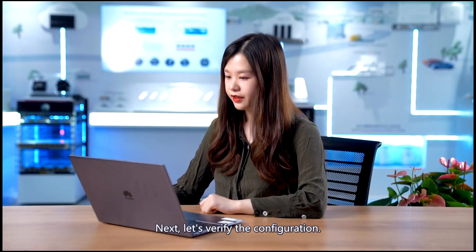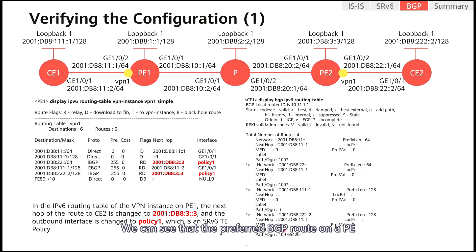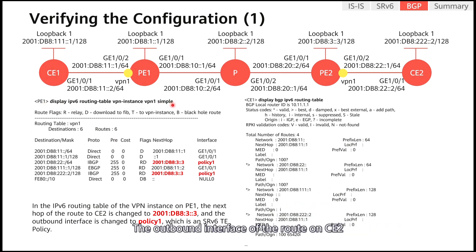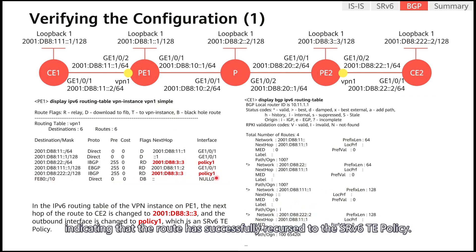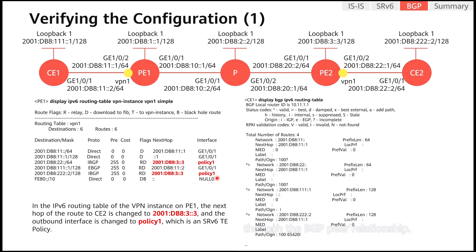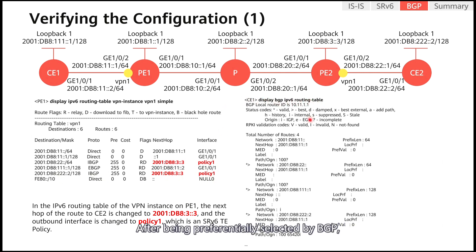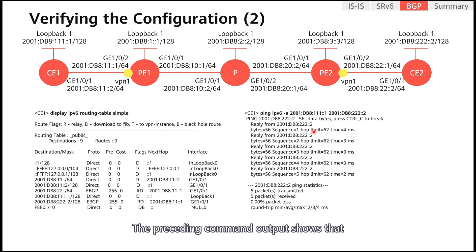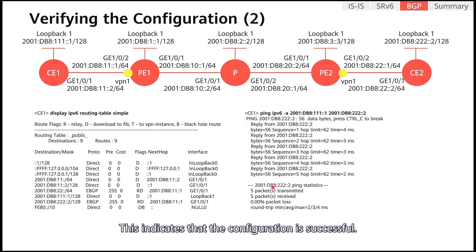Next, let's verify the configuration. We can see that the preferred BGP L3 route on a PE first enters the IPv6 routing table of the corresponding VPN instance. The outbound interface of the route on C2 is displayed as Policy 1, indicating that the route has successfully recursed to the SRv6 TE policy. P1 then advertises the route to C1 through the BGP L3 peer relationship. The route first enters the BGP IPv6 routing table, and after being preferentially selected by BGP, it enters the IPv6 routing table. The command output shows that C1 and C2 can ping each other successfully, indicating that the configuration is successful.